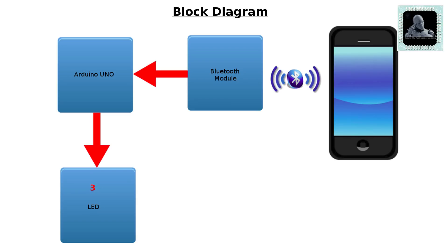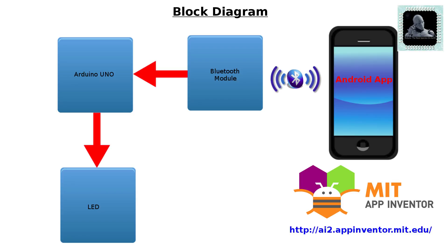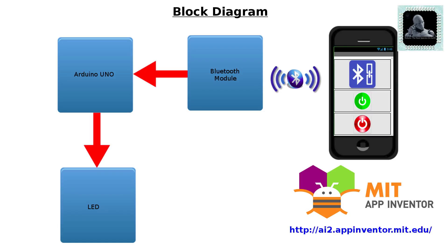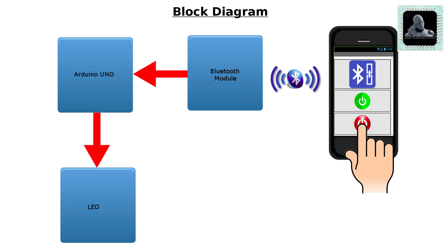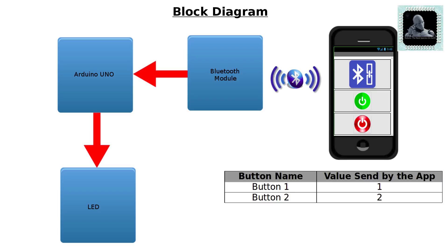Let's understand a few things about our Android application. We will use MIT App Inventor to build this app. It mainly has two buttons: button one will be used to turn on the LED and button two will be used to turn off the LED. Whenever a button is pressed, the application will send a value over the built-in Bluetooth on our Android phone, which will be received by the Arduino through the Bluetooth module, and Arduino will control the LED.